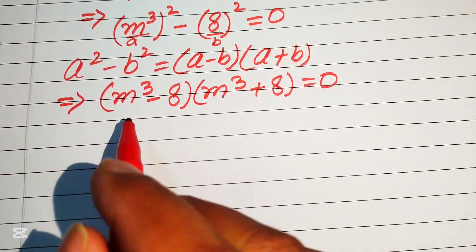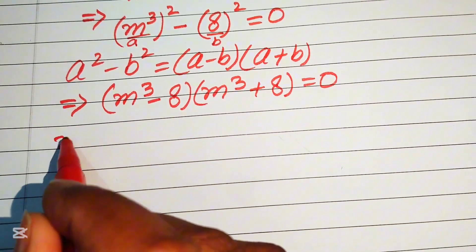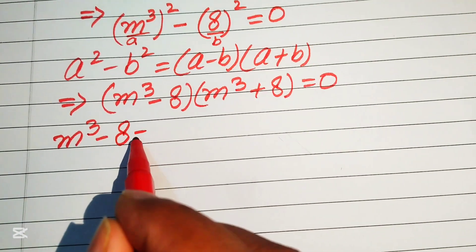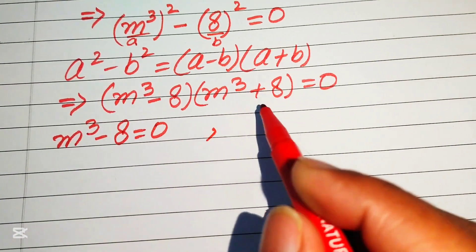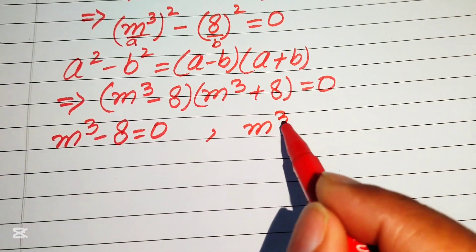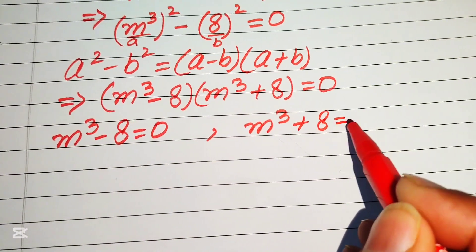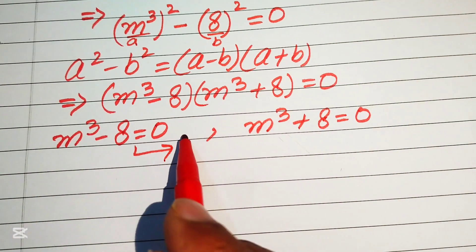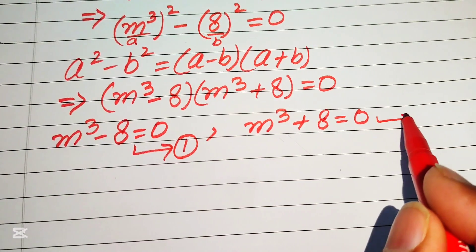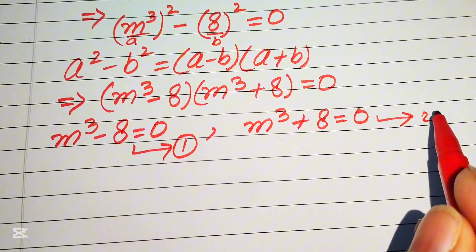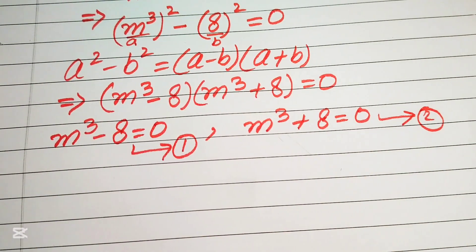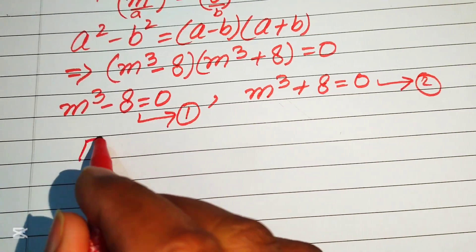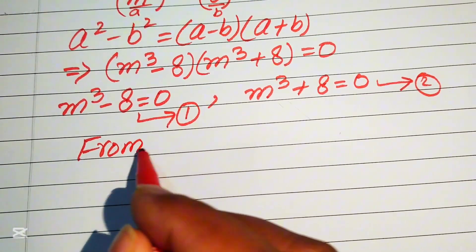We now convert this into two cases. The first case is m³ minus 8 equals 0 (Equation 1), and the second case is m³ plus 8 equals 0 (Equation 2). We will solve these two equations simultaneously.